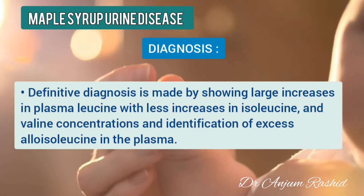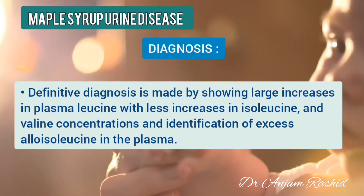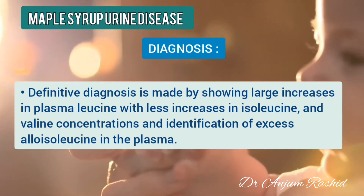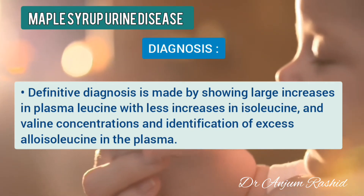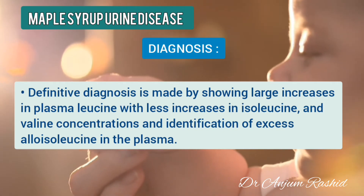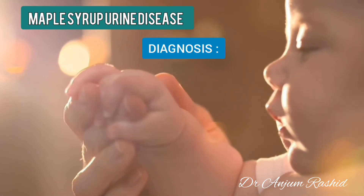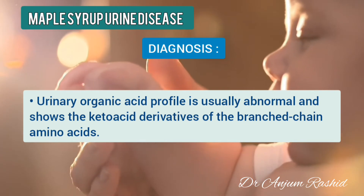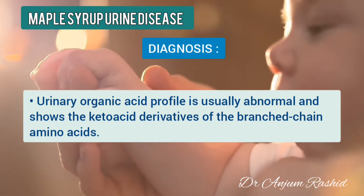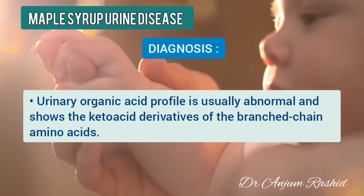Definitive diagnosis is generally made by showing a large increase in plasma leucine with less increase in isoleucine and valine concentration, and identification of excess alloisoleucine in the plasma. The urinary organic acid profile is also abnormal and shows the ketoacid derivatives of the branch chain amino acids.